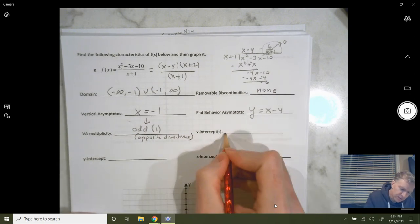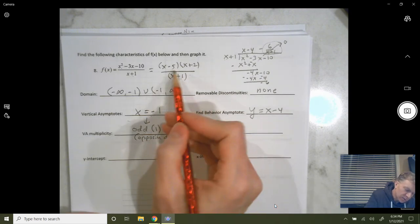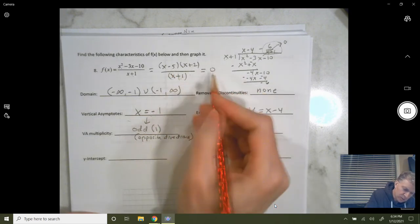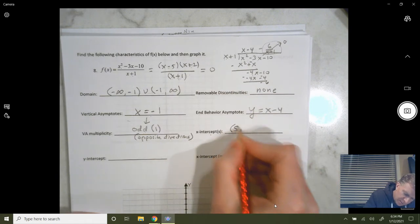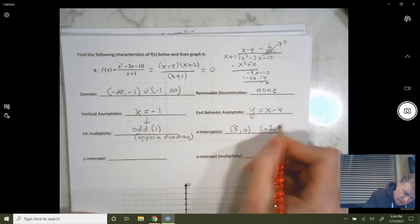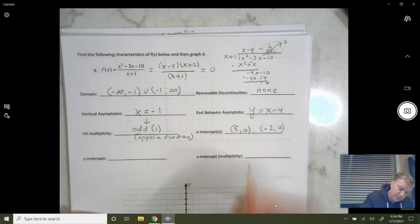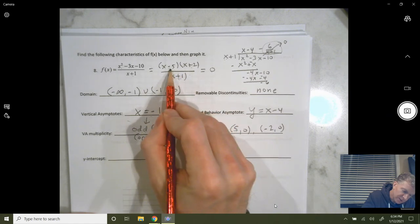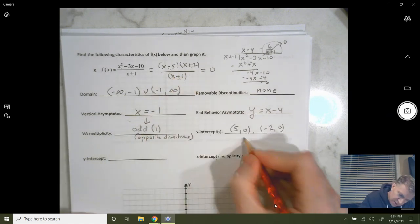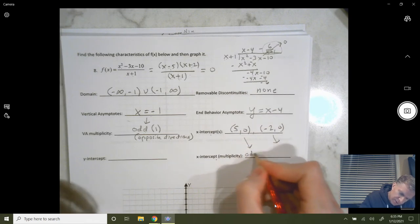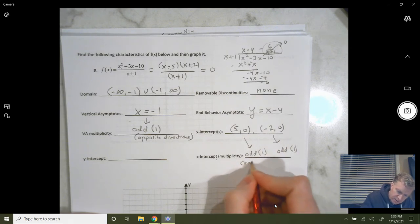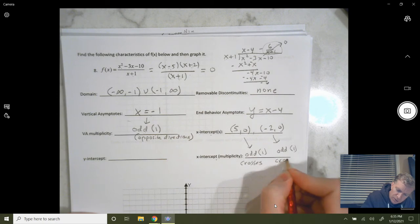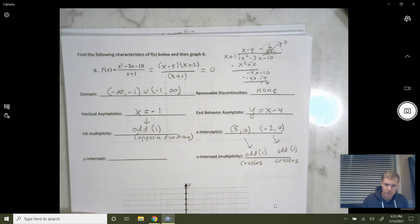X intercepts. X intercepts are values of x that make your y value 0. So, if we set this entire function equal to 0, that's only 0 when the numerator equals 0. So, positive 5 and negative 2. 5 comma 0 and negative 2 comma 0. Both of those have a multiplicity of 1, because it's just x minus 5 to the first, and x plus 2 to the first. So, both of those are odd multiplicity. Which means when you touch the x-axis, you're going to cross right through the x-axis.